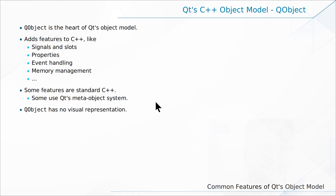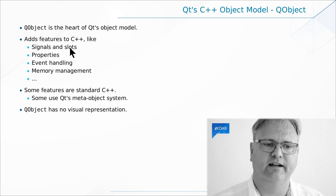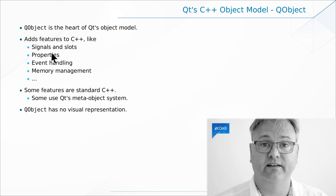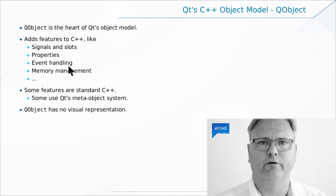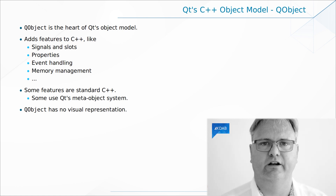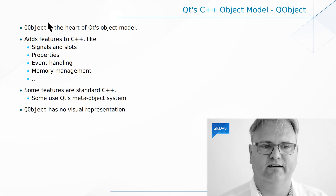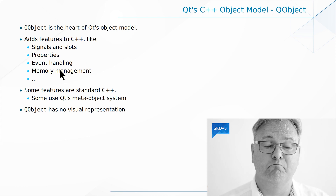QObject is a class that sits at the top of the class hierarchy for an enormous number of classes in C++ with Qt. It adds facilities for signal-slot communication, as we'll see in the next three videos. It adds the whole property system that you've seen in many videos by now. It adds event handling — how we integrate with the underlying hardware, so when the user clicks somewhere or types something. And it adds memory management.